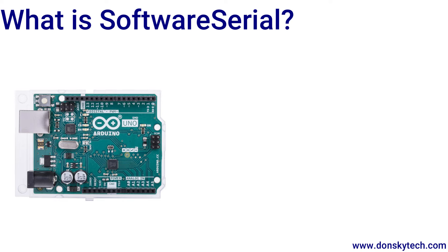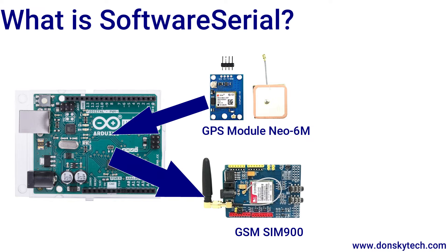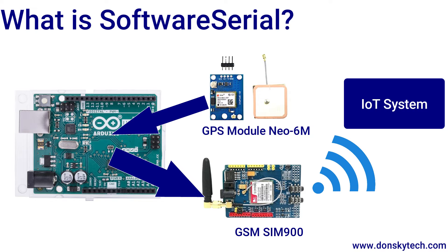Imagine you're working on an Arduino Uno project where you need to get the GPS location of your device and at the same time send that data to your Internet of Things server — so you need to communicate with two serial devices. Unfortunately, the Arduino Uno contains only one hardware UART port, which is the TX, RX0, and one GPIO pin. To work around this problem, you can use what we call software serial, which allows you to create a virtual UART port where you can send or receive serial communication to your device.